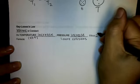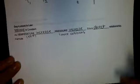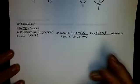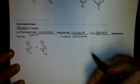So therefore, this is also a direct relationship. The formula for Gay-Lussac's law is P1 over T1 equals P2 over T2.